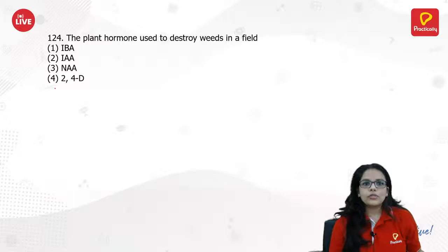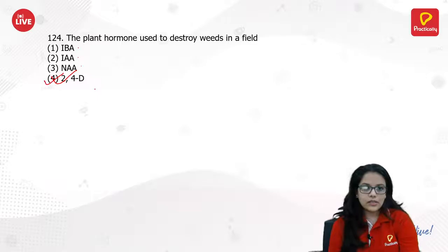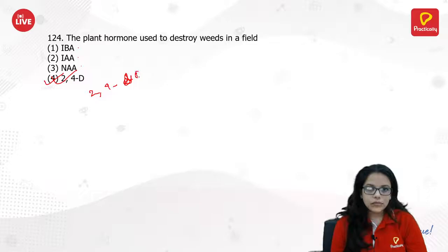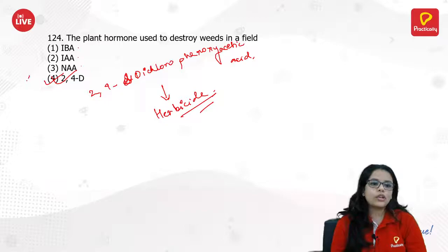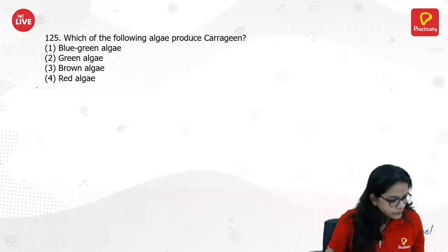The plant hormone used to destroy weeds in a field — not IBA, not IAA. It is 2,4-D: 2,4-dichlorophenoxyacetic acid, and it is used as a herbicide to take out weeds. That is the answer.